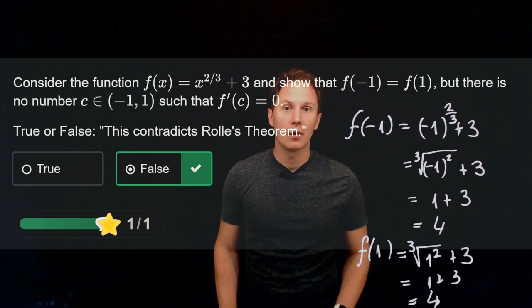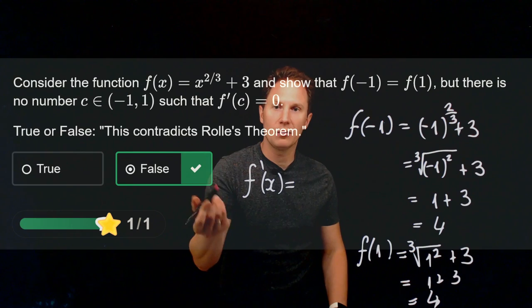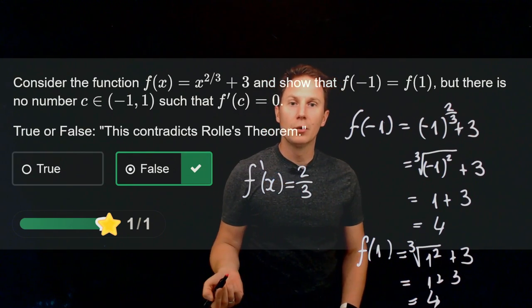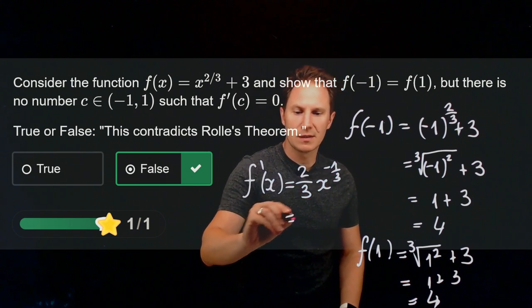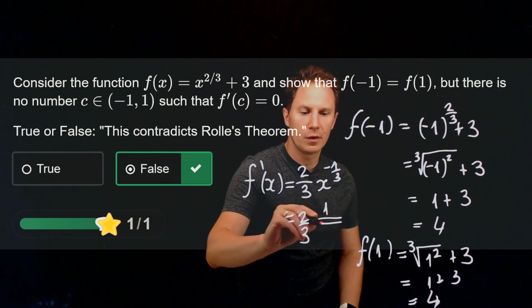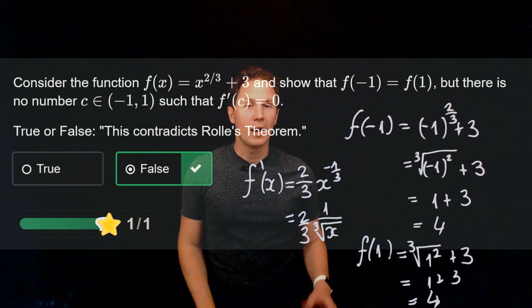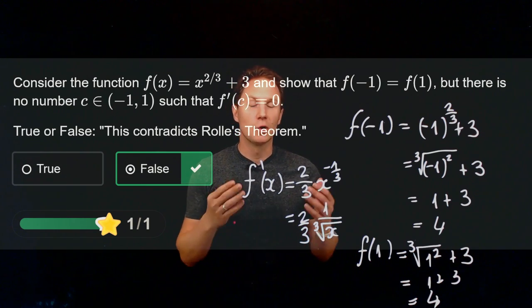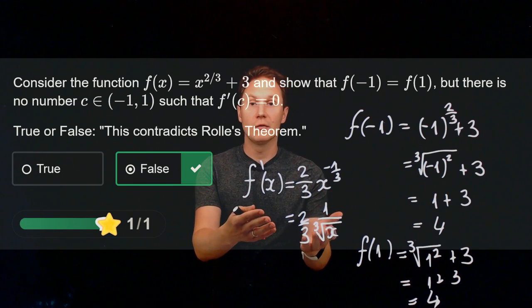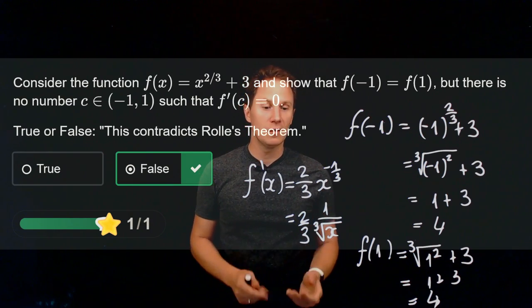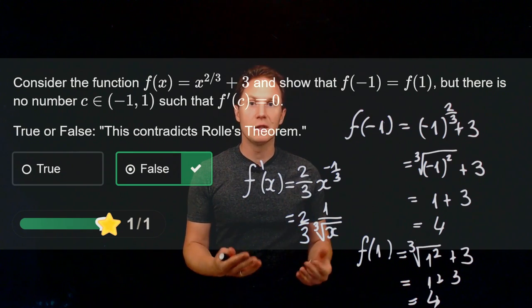Namely, at x = 0 the derivative of this function does not exist. By the power rule, the derivative is (2/3)x^(−1/3), which equals (2/3) · (1 / ∛x). At x = 0 this is undefined. So Rolle's theorem does not apply to f(x). Therefore, it is not guaranteed that there is a point at which the derivative would be zero — and indeed, looking at this derivative between −1 and 1 where it is defined, it's never zero.